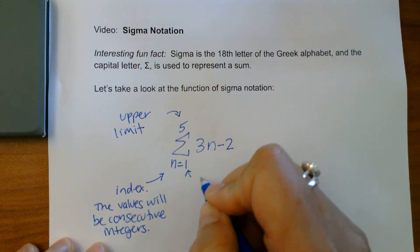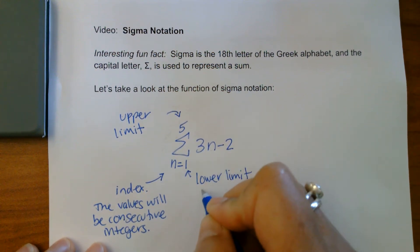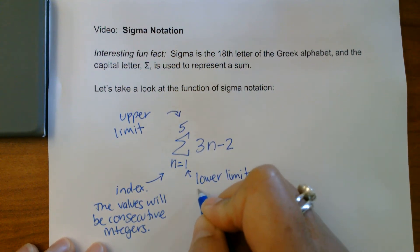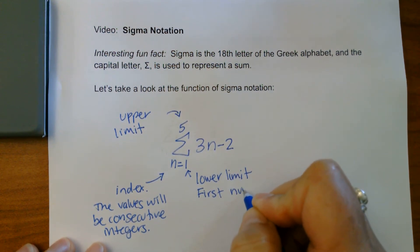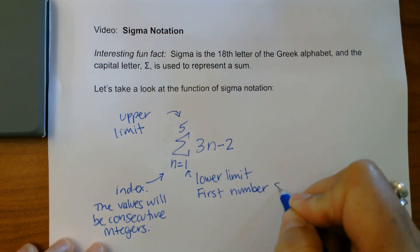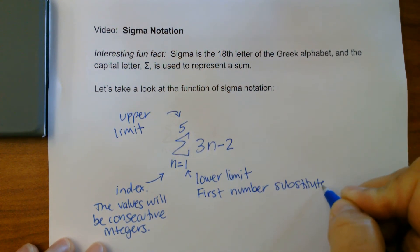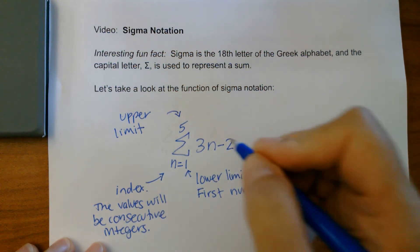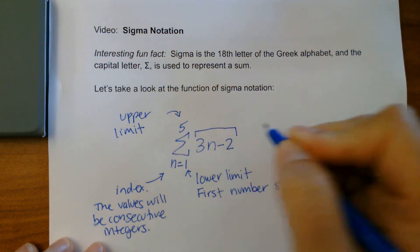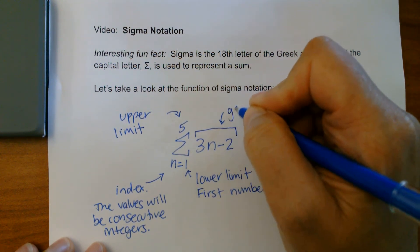And remember, integers are whole numbers and their opposites. One is called the lower limit — this is going to be the first number we substitute in. And three n minus two is our general term that we're going to be using.